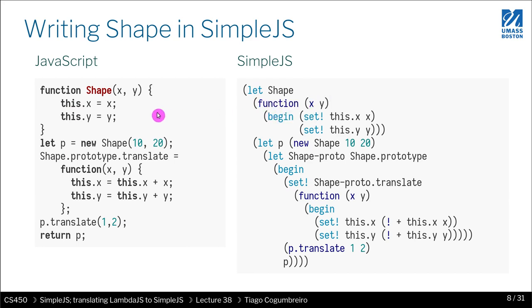Functions are anonymous, they do not have names. If I want to create a function shape, I have to assign it to shape. I do let shape, then create a function. Inside a function, I have access to this. The set! is the same as an assignment, how we mutate an object. We say we want to mutate this.x and assign x to it, and assign y to this.y. It's exactly these two lines of code.